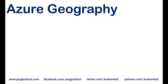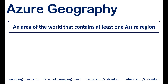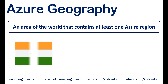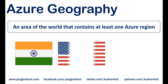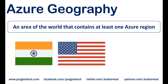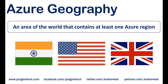An Azure geography is an area of the world that contains at least one Azure region. For example, India is a geography. Similarly, United States and United Kingdom are geographies.